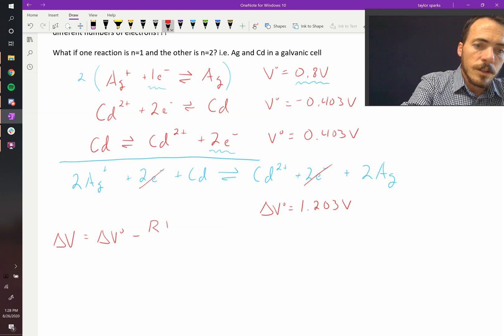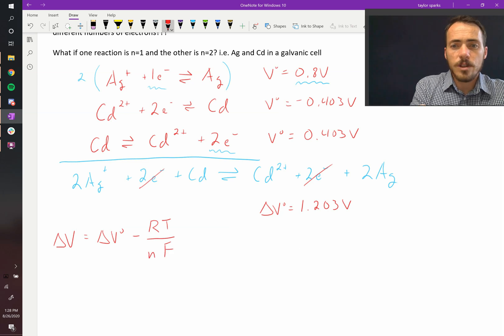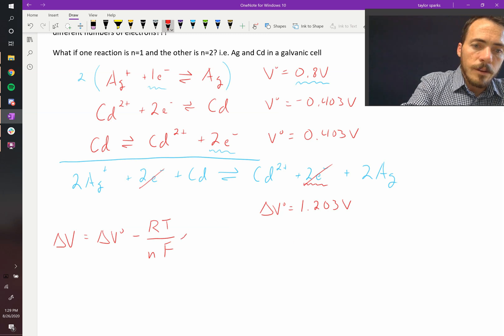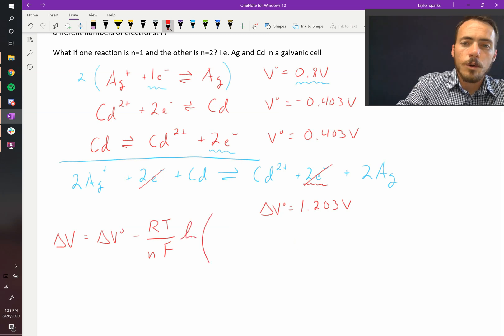Minus RT, the gas constant times temperature, divided by nF. n is the number of electrons in the reaction. That would be two. F is Faraday's constant, multiplied by the natural log of the reaction quotient.